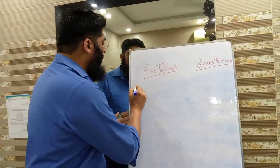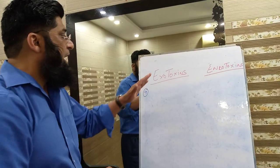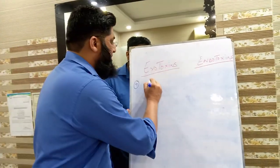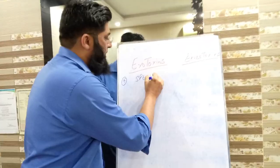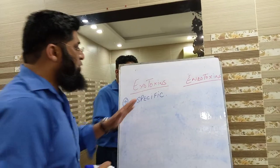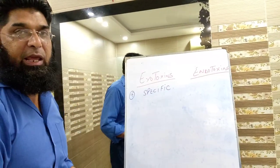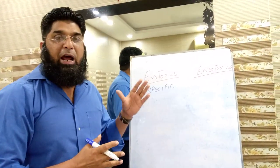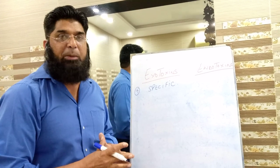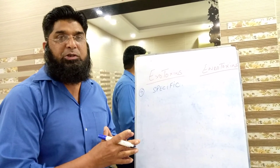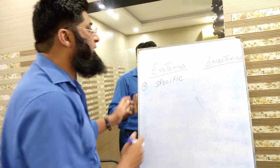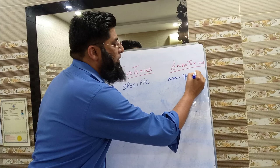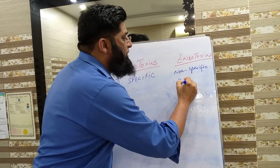The ninth point of differentiation: exotoxins are more specific in their action because they attach to specific receptors on the surface of host cells. On the other hand, endotoxins are non-specific — they are generalized in their action.